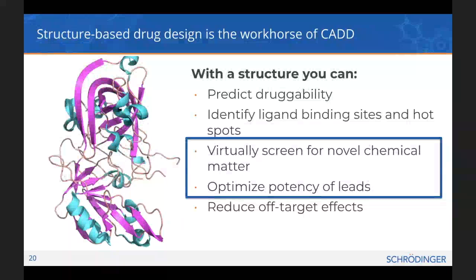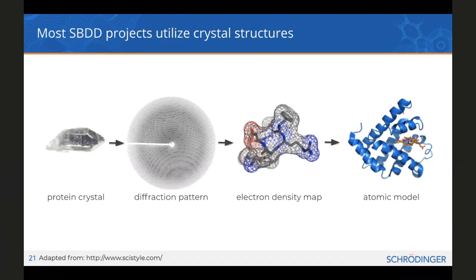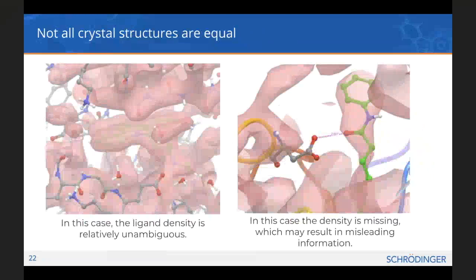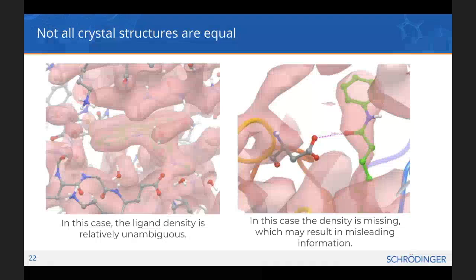Structure-based drug design often begins with a crystal structure. We take a protein crystal, fire high-powered X-rays at it, take the resulting electron density map, map it onto the known sequence of the protein, and end up with a 3D atomic model. Even though this is the gold standard, there are still further steps needed to prepare this atomic model for computational modeling tasks. Not all crystal structures are of the same level of quality, and this is where a workflow of questions is often more useful than a simple checklist, because every situation will be unique.